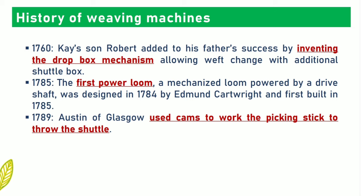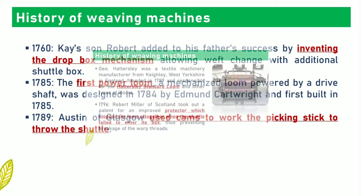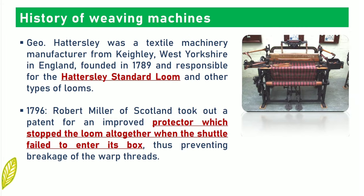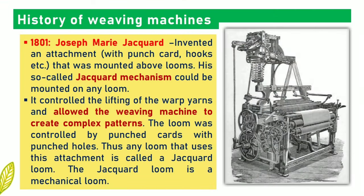The first power loom, powered by a drive shaft, was designed in 1784 by Edmund Cartwright and first built in 1785. In 1789, G. Hattersley developed Hattersley's standard loom and other types of loom. In 1796, Robert Miller of Scotland took out a patent for an improved protector which stopped the loom altogether when the shuttle failed to enter its box.